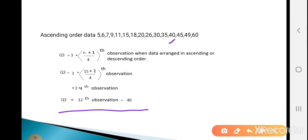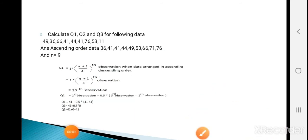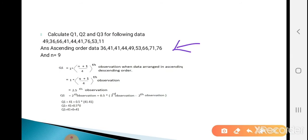This is the method for calculating quartiles for ungrouped data. Now see the next example. Calculate Q1, Q2, Q3 for the following data: 49, 36, 66, 41, 44, 41, 76, 53, and 11. Ascending order: 36, 41, 41, 44, 49, 53, 66, 71, and 76. The total number of observations n is 9.